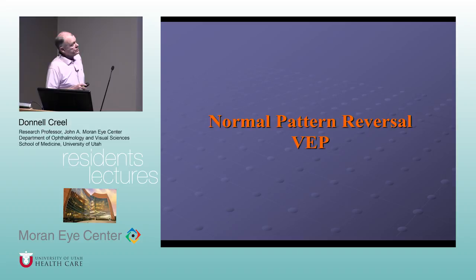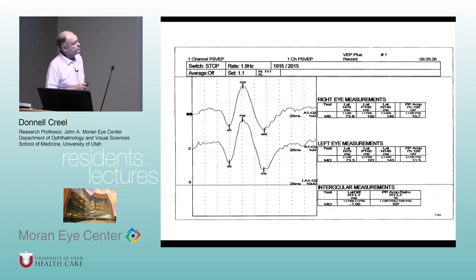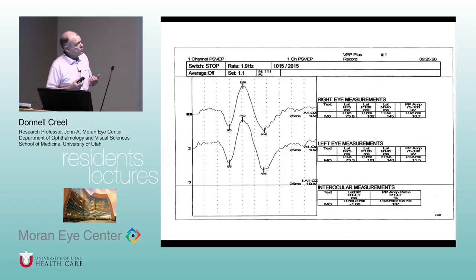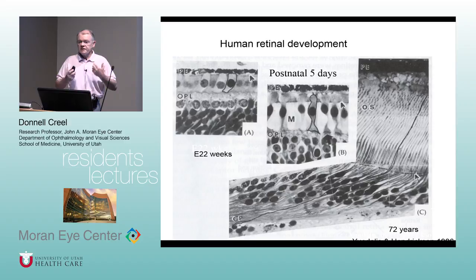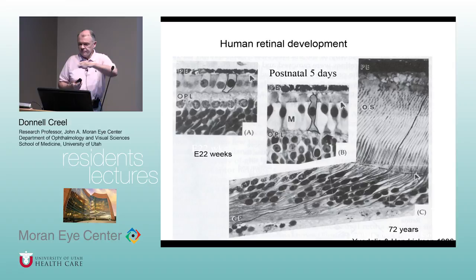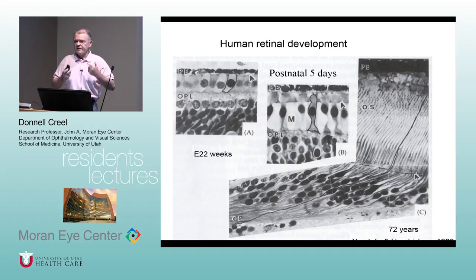This is the normal pattern reversal visually evoked potential. You get a positive wave that peaks around 100 milliseconds, and everyone in this room would look like this. The VEP is present at birth, but because the system is not myelinated, responses are much slower. You can watch sequentially — testing an infant from a few months of age through grade school — as the P100 starts out around 180 milliseconds and improves 10 or more milliseconds per year, so that by about first grade it looks like an adult.